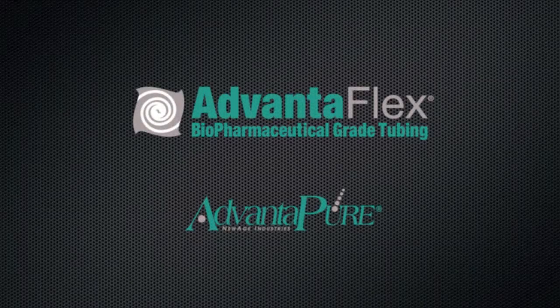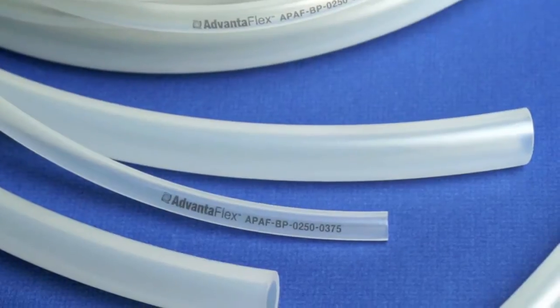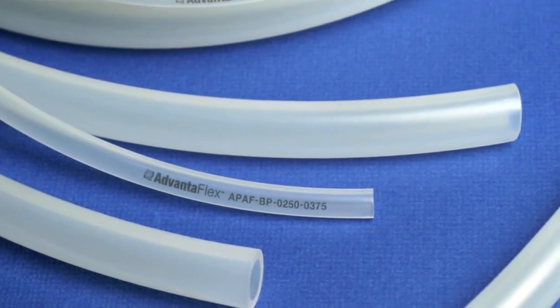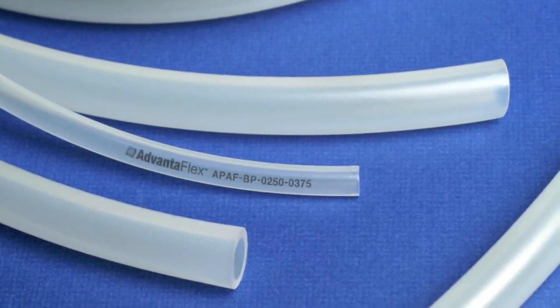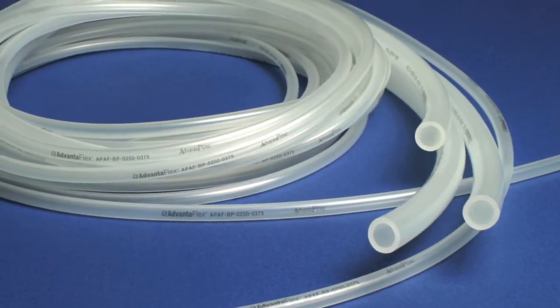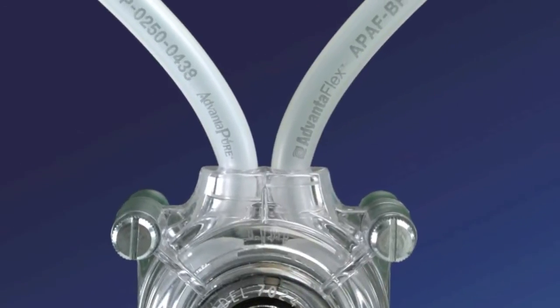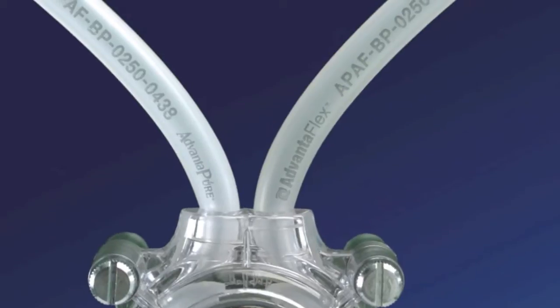Advantiflex from Advantipure is a biopharmaceutical grade tubing developed specifically for critical fluid processing. It's ideal for single-use manifold assemblies, sterile filling and sampling, vaccine production, bioreactor processes, high purity water transfer, peristaltic pumps, and other pharmaceutical and biologic applications.